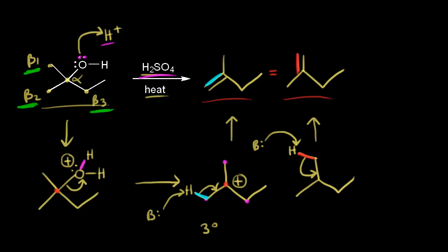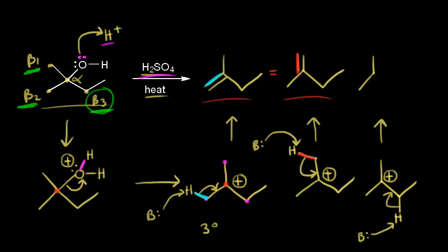But what about the beta three carbon? Let me draw one more tertiary carbocation. This time we're going to take a proton away from our beta three carbon. A weak base comes along and takes that proton, and these electrons move into here to form a double bond. So we would have our alkene that looks like this. The electrons in this bond move into here to form our double bond. Now we've gone through the complete mechanism and we have two products.